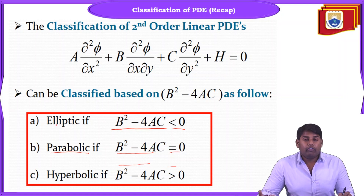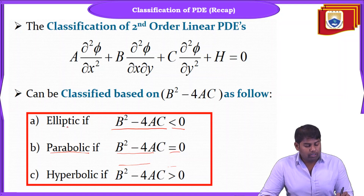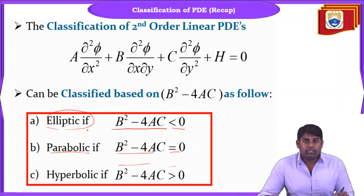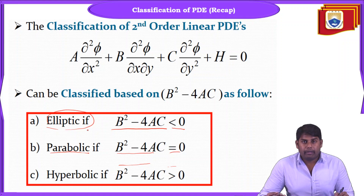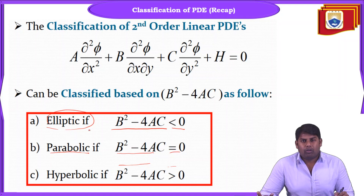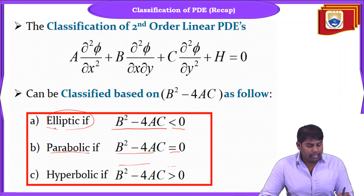Why do we classify? When we classify the equation, we understand the behavior of the flow. For elliptic flow, we have imaginary roots, meaning the characteristic equations are imaginary. This means whatever disturbance is produced will travel both upstream and downstream — in all directions throughout the medium. That behavior is elliptic.